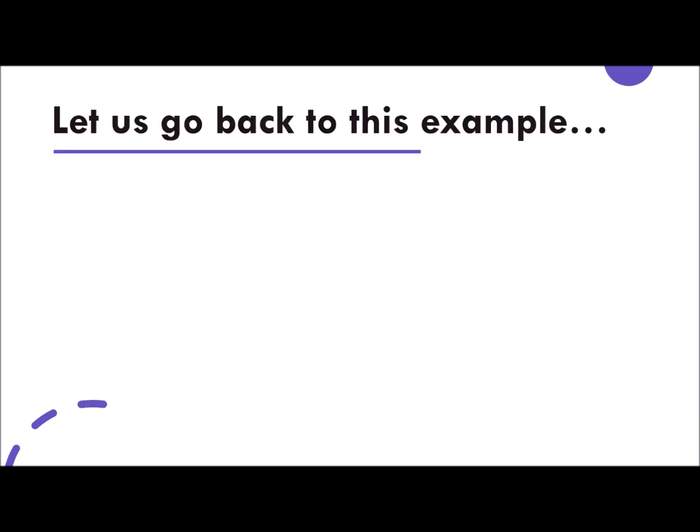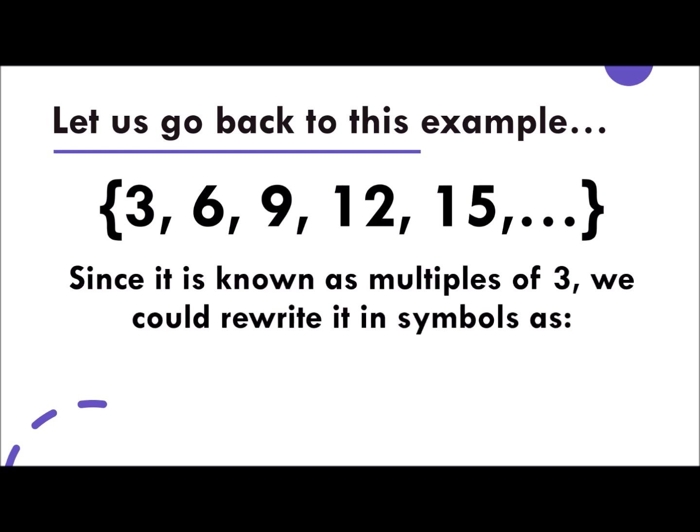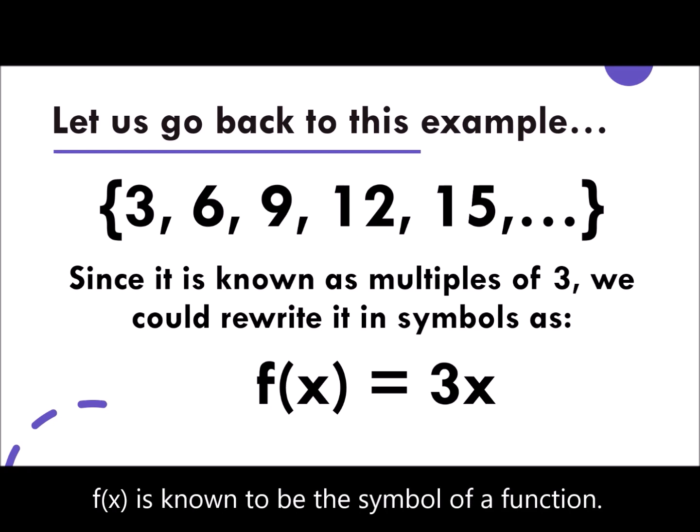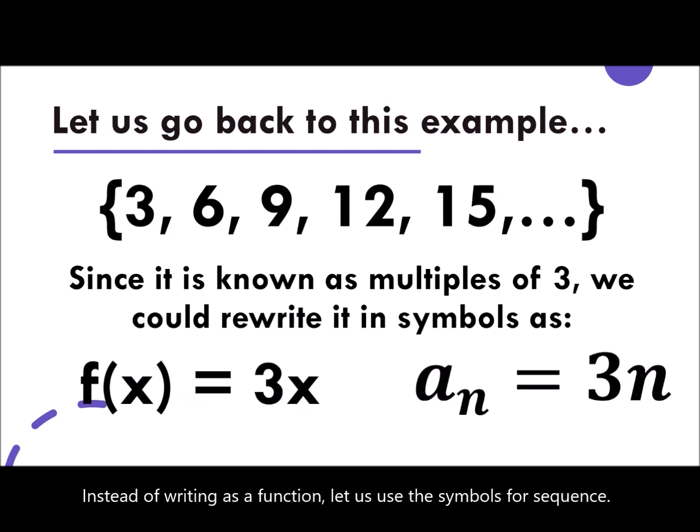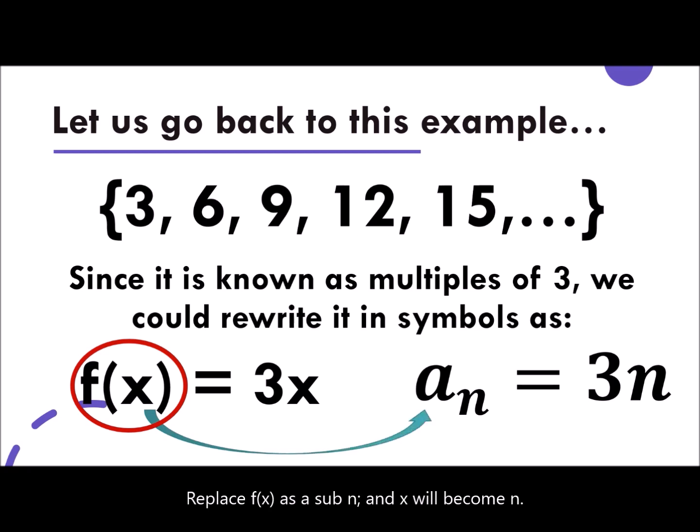Let us go back to this example. 3, 6, 9, 12, and 15. Since it is known as multiples of 3, we could rewrite it in symbols as f of x is equal to 3x. F of x is known to be the symbol for function, which is related or part of the term or definition of a sequence. In sequence, instead of writing f of x is equal to 3x, we could rewrite it as a sub n is equal to 3n. F of x here will now be a sub n in the symbol of sequence. And the x here will now be replaced as n. So take note of that.